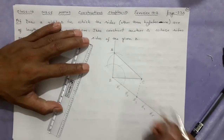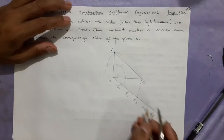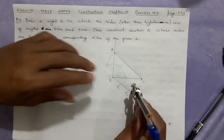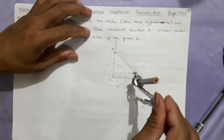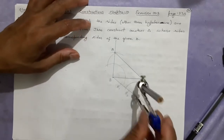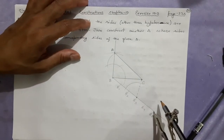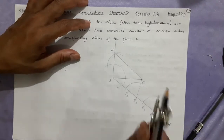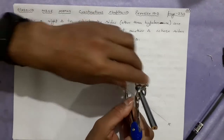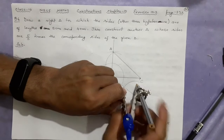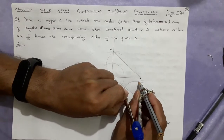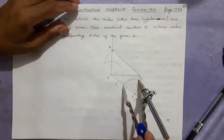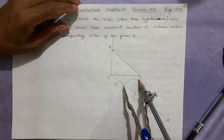Done. Now we are going to make this angle exactly equal here. Take the compass and make this arc. Done. Take the same size of the arc here and make that same arc. Done. Now measure how big was that angle — this is the size of the angle.